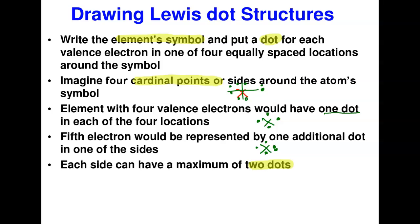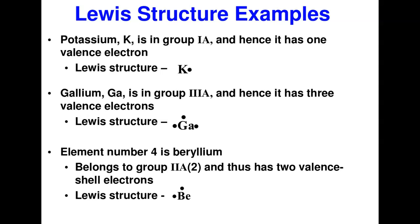For example, potassium (K) is in group 1A, which means it has one electron in its outermost shell — so we put one dot around it. Gallium is in group 3A and will have three dots around its symbol. Beryllium is element number 4 and belongs to group 2A.